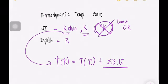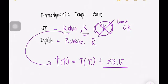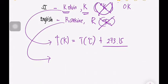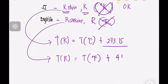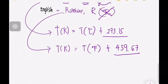In the English system, we use the Rankine scale, designated as R — not degree Rankine. The Rankine scale is related to Fahrenheit, just as degree Celsius is related to Kelvin. To compute the temperature in Rankine, it equals the temperature in Fahrenheit plus 459.67.